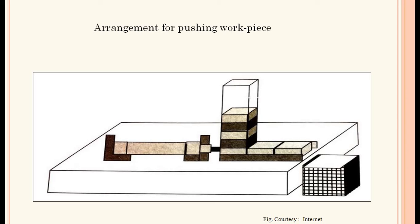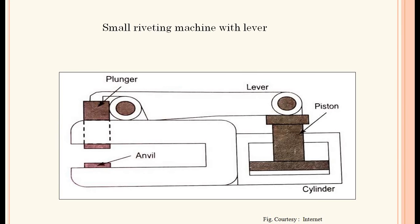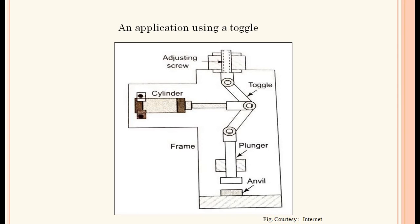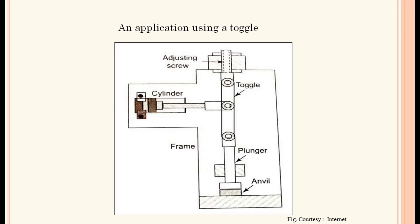Arrangement for pushing a workpiece is also the same operation as previously described. Then a small riveting machine with lever — the operation is similar to the stamping operation. An application using a toggle mechanism is also the same type.